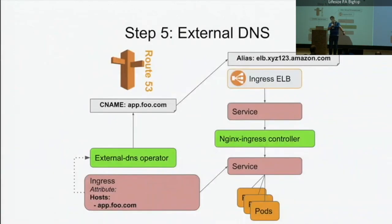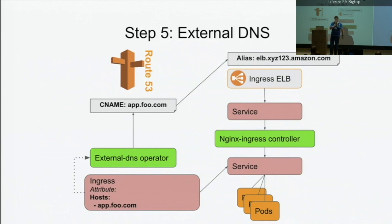There's a really handy tool — the green thing on the left — called external-DNS. It's another little operator which sits on the server, watches for all the ingress definitions, and when it sees something with a hostname, it goes and populates Route 53, Azure DNS, Google DNS — whatever environment you're in, it can talk to them all. It creates the actual application hostname as a CNAME which points to the alias for the load balancer that NGINX is loading into. Very clever.